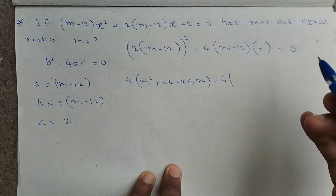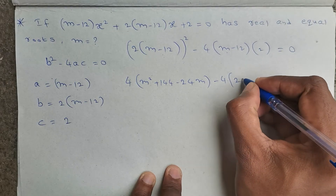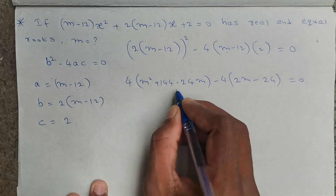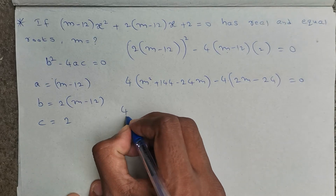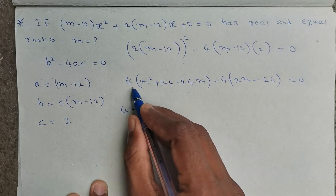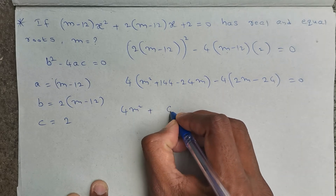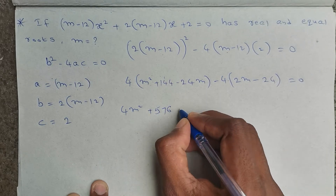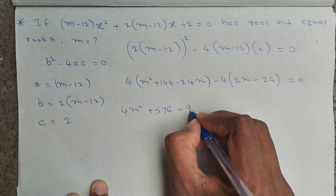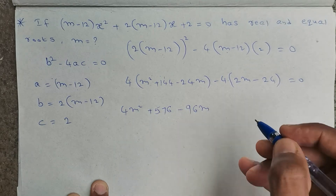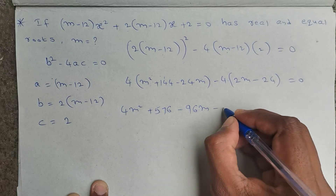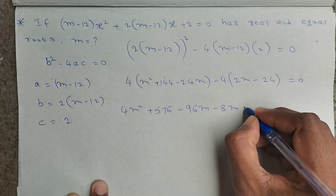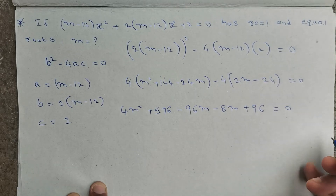Continuing the expansion: minus 4 into m into 2 gives minus 8m, and minus 4 into 24 gives minus 96, equals 0. So expanding fully we get 4m² plus 576 minus 96m minus 8m minus 96 equals 0.